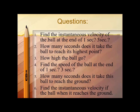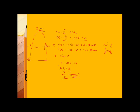Next, question three: how high does the ball go? Since the highest point occurs at t = 2 seconds, we substitute into the position equation: s = −16(2²) + 64(2) = 64 feet. So the ball reaches a height of 64 feet above the starting point.